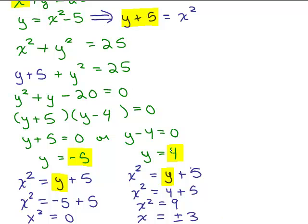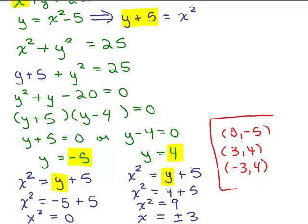So when y is 4 there's two possibilities for x. This gives us two ordered pairs. It's going to give us the ordered pair 3, 4 and it's also going to give us the ordered pair negative 3, 4. And I'm going to go ahead and put this ordered pair right here too. We had 0, negative 5. So those look to be our three ordered pairs for this problem.